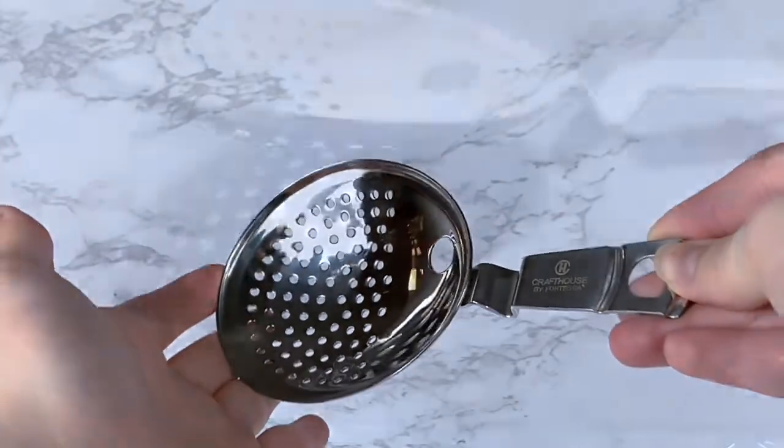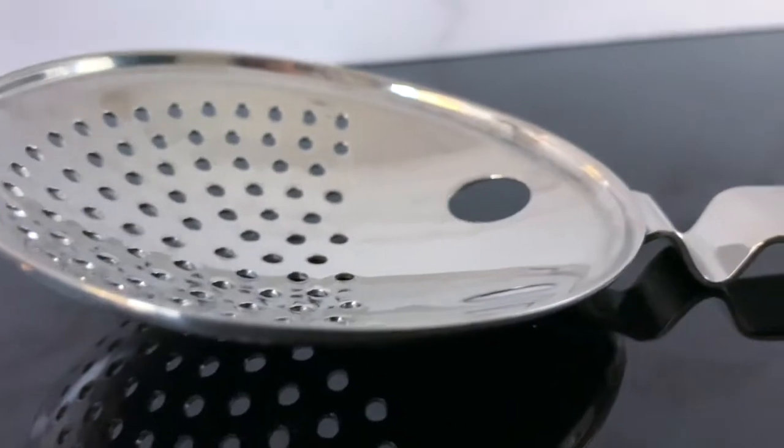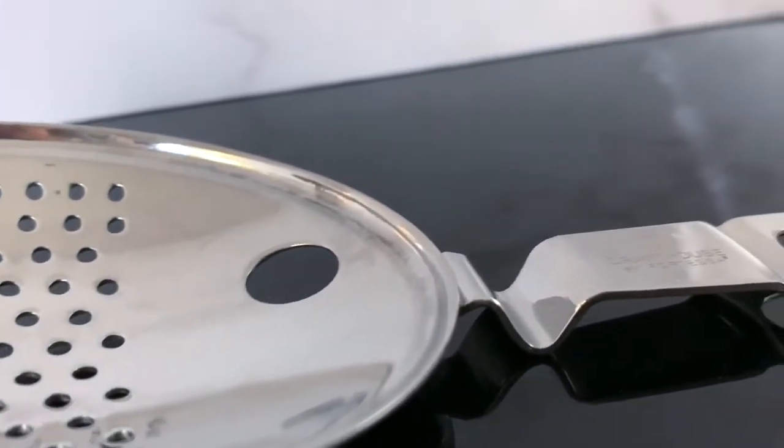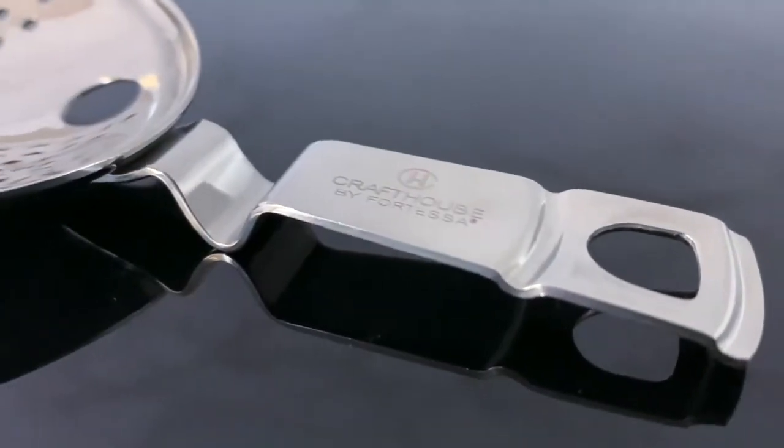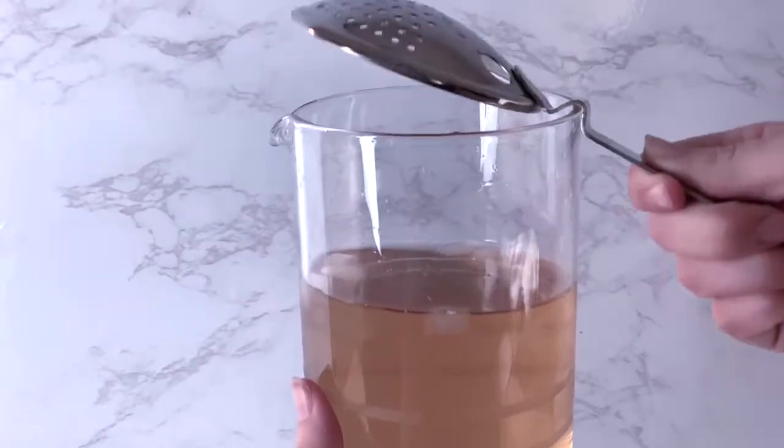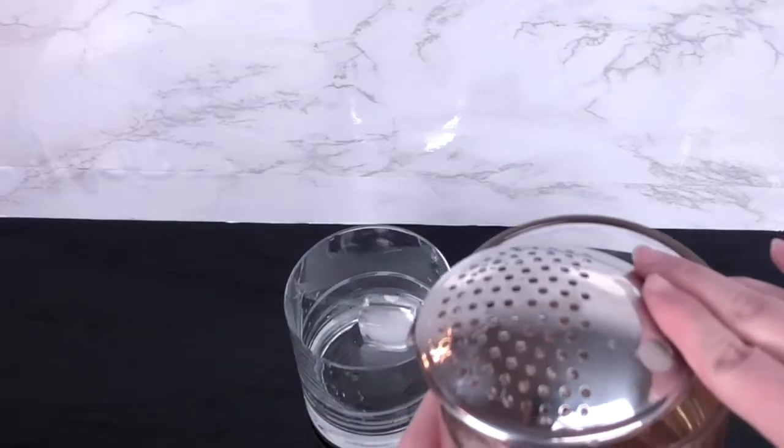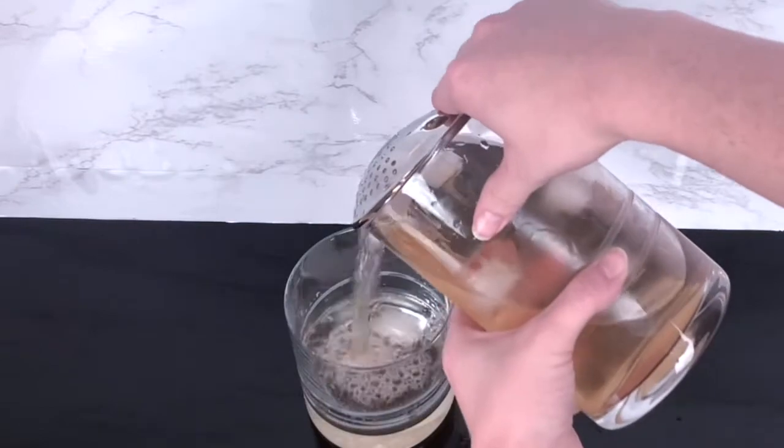Ensure that your cocktails will be cool and refreshing without being watered down with the julep strainer. The julep strainer possesses a crimp in its handle, which helps guide itself into your mixing glass to leave the ice behind and contribute to a smooth pour.